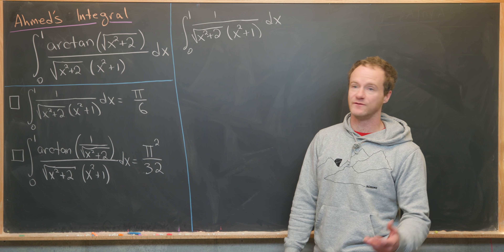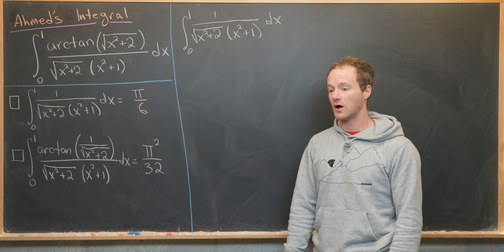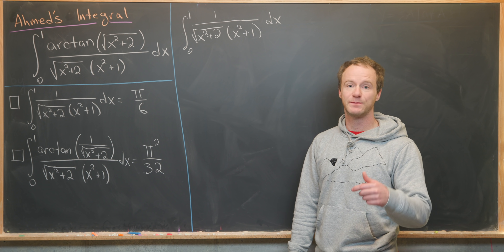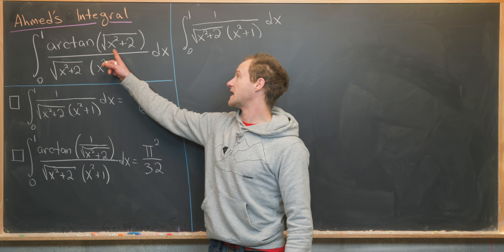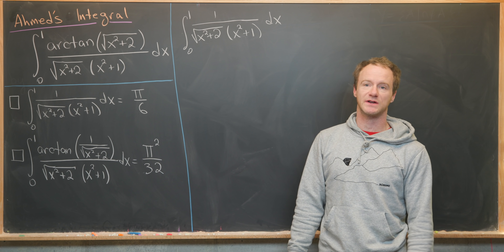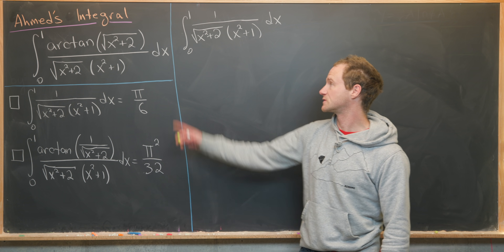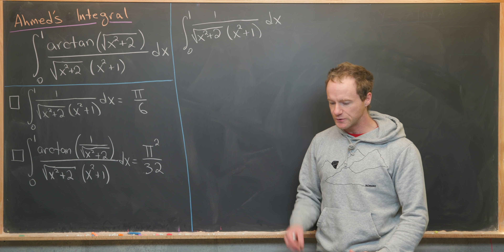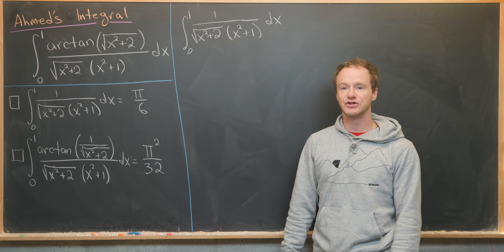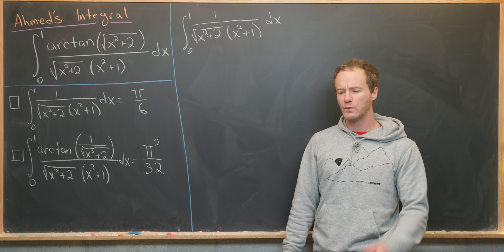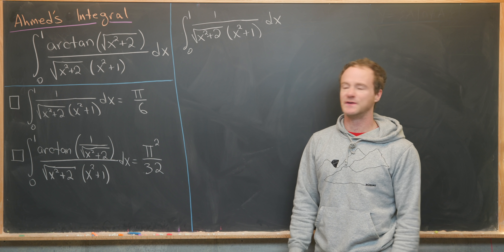Here I've got a really nice integral that was suggested by a viewer. It's known as Ahmed's integral, and I'm following a solution that you can find on the archive, posted below. Our final goal is the integral from zero to one of arctan of the square root of x squared plus two, over the square root of x plus two times x squared plus one dx. We're going to do this using some identities involving the inverse tangent, as well as two derived integrals, though we won't derive the identities to keep this video shorter.